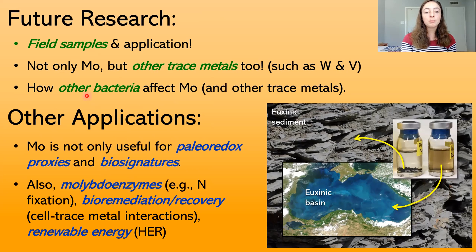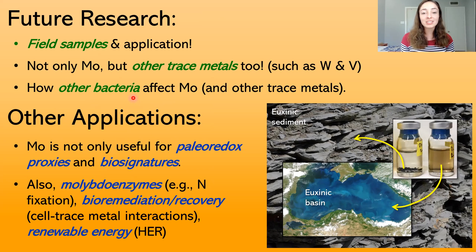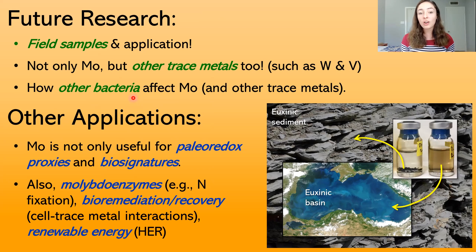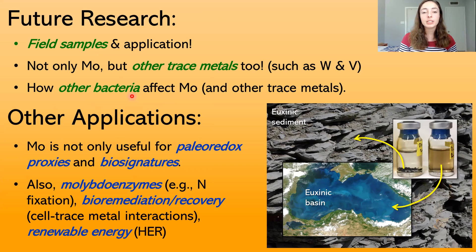Another great next step would be to look at other bacteria. I've only looked at two species so far and already seen major differences in how they affect molybdenum. Looking at other species — and there are many in euxinic environments — would be really important for understanding their effect on molybdenum behavior and the signatures they might form during molybdenum sequestration.